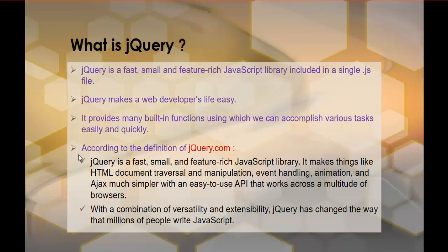According to the definition on jQuery.com — keep in mind, jQuery.com is the official website of jQuery — they have defined jQuery as a small, fast and feature-rich JavaScript library. jQuery makes things like HTML document traversal, manipulation, event handling, animation and Ajax much simpler with an easy-to-use API that works across a multitude of browsers.